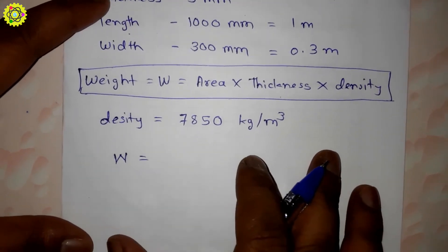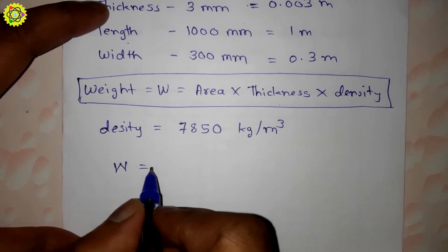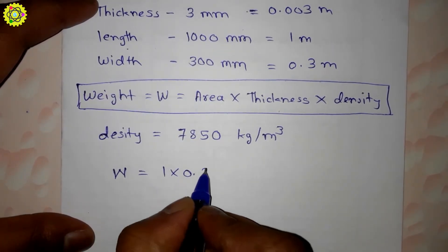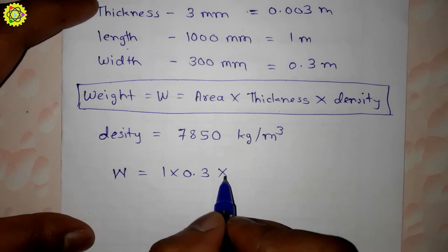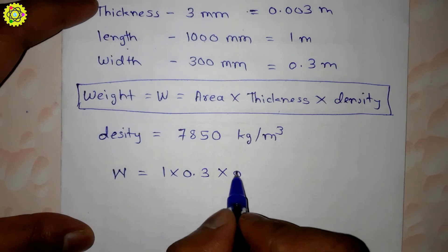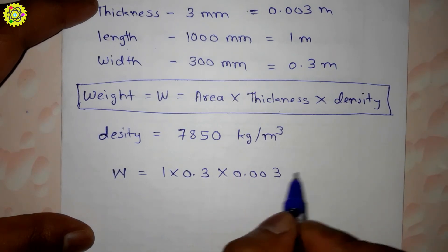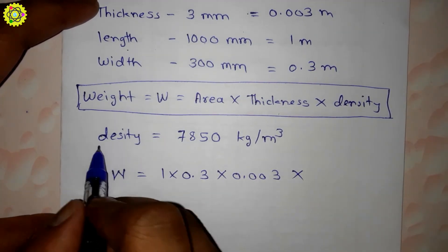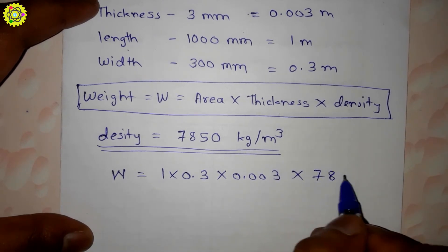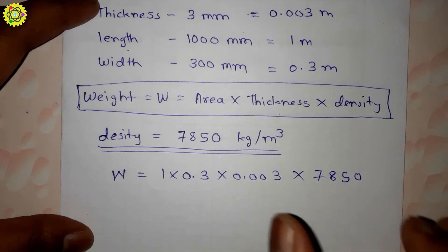In our formula, area is length times width. So here 1 times 0.3 times thickness 3 mm, that is 0.003 meter, times density 7850 kg per meter cube.